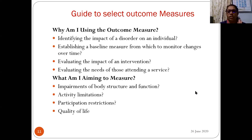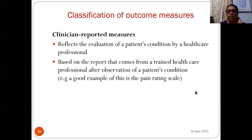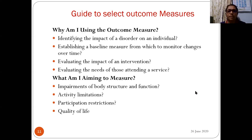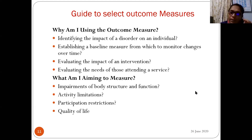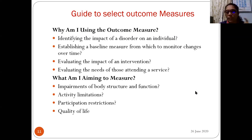When selecting an outcome measure, we should ask: why am I using it? The reasons include identifying the impact of the disorder on the individual, establishing a baseline from which to monitor changes over time, evaluating the impact of the intervention, and evaluating the needs of those attending the service. We should also consider what we are aiming to measure using the ICF classification domains: body structure and function, activity limitation, participation, and environment.